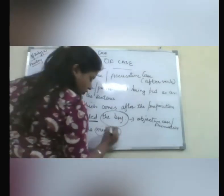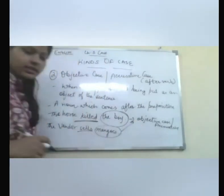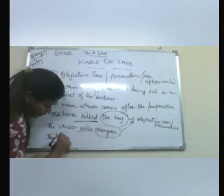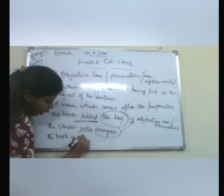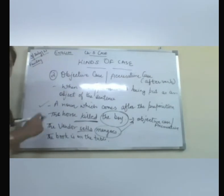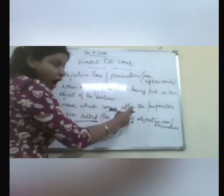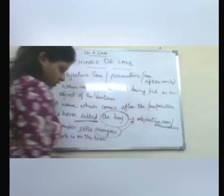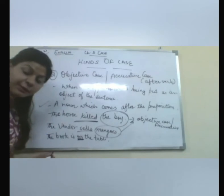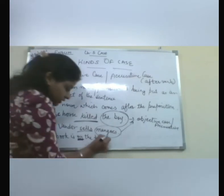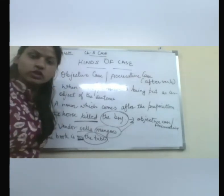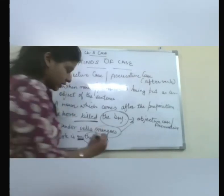Now let's take an example for the second point of the objective case: 'The book is on the table.' Here the preposition is 'on'. The noun coming after the preposition is 'the table'. So 'the table' is the objective case — or you can say it is the accusative case.